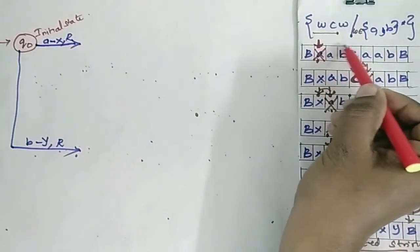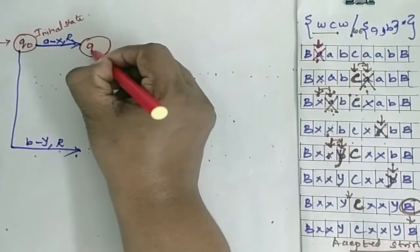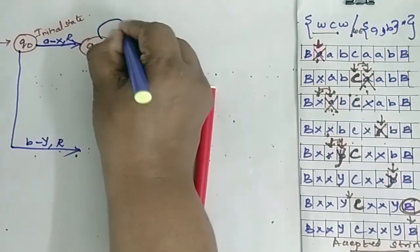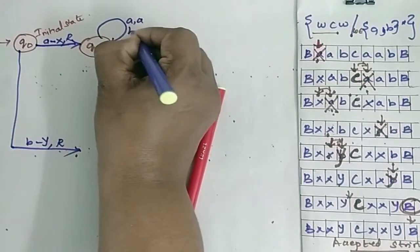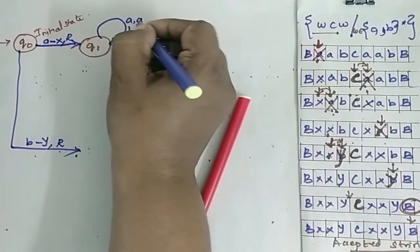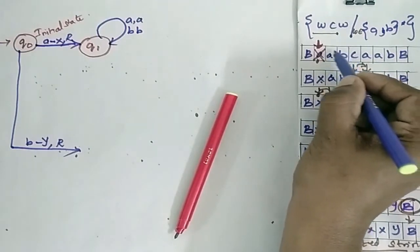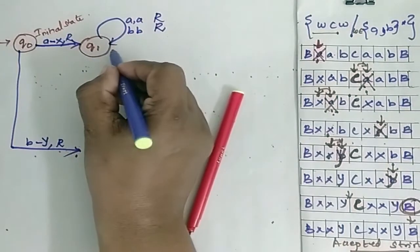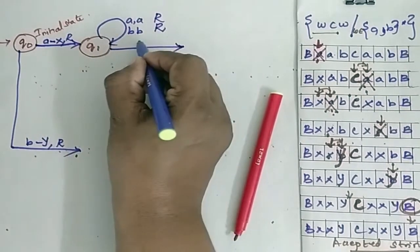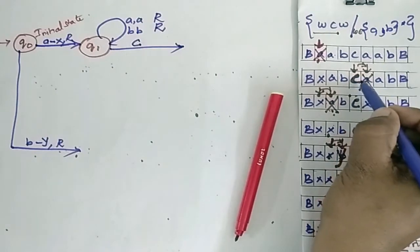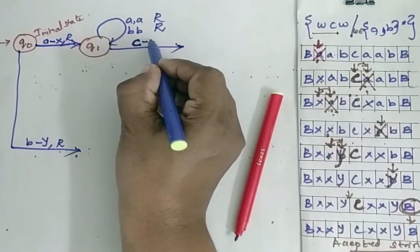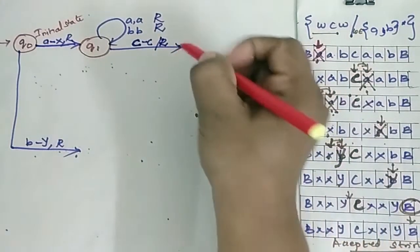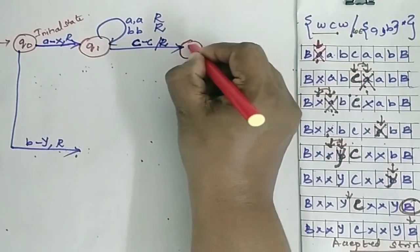After replacing A with X in Q0, the head moves right and can come across any number of A's and B's — it will continue moving right. Eventually it must encounter a C. When it encounters C, C is kept as-is and the head moves right, transitioning to state Q2.